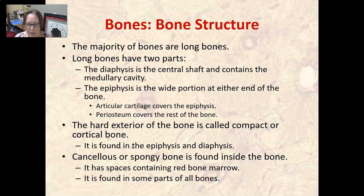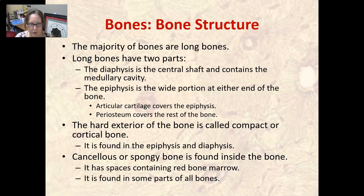Cancellous or spongy bone is found inside the bone. It has a lattice-work appearance with spaces that contain red bone marrow. It is found in some parts of all bones. The purpose of spongy bone is to make your bones lighter — if our bones were nothing but compact bone, our skeletons would be very heavy.